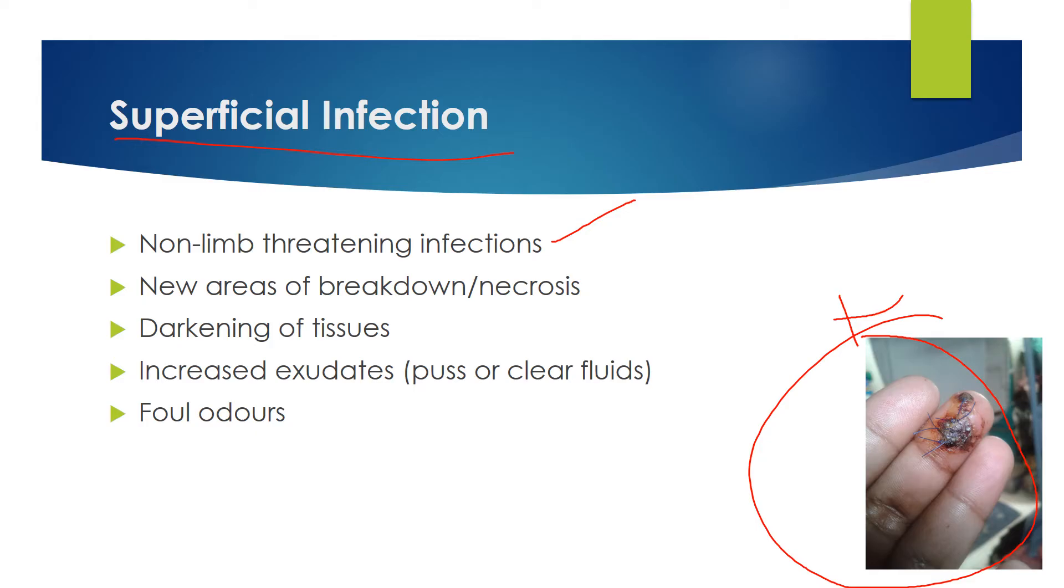They're non-limb threatening infections. Some signs include new areas of breakdown and necrosis. That's a big one and that's related to darkening tissue. If you see increasing areas of darkening tissues, that can be a sign of infection.